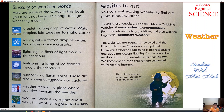This is the glossary of this book, Weather. A water droplet is a tiny drop of water — water droplets join together to make clouds. An ice crystal is a frozen drop of water — snowflakes are ice crystals. Lightning is a flash of light from a thundercloud. A hailstone is a lump of ice formed inside a thundercloud. A hurricane is a violent storm, also known as a typhoon or cyclone. A weather station is a place where scientists measure the weather. A weather forecast is a report about what the weather is going to be like.